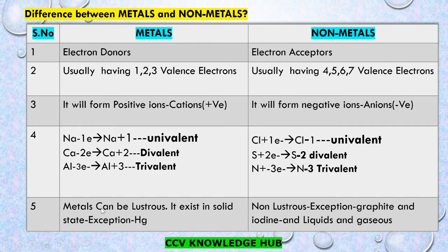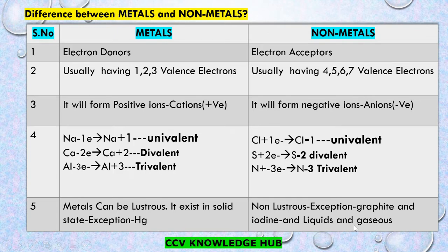Metals can be lustrous — it means they can be polished — and they exist in solid state. There is an exception: mercury exists in liquid state at room temperature. Non-metals are non-lustrous and cannot be polished. Here is an exception: graphite and iodine are lustrous and can be polished. Non-metals exist in liquid and gaseous states.